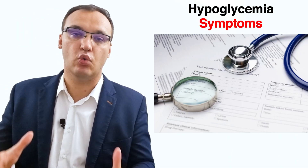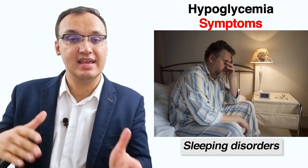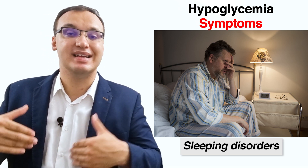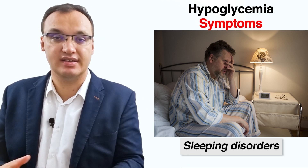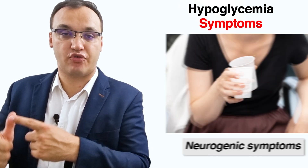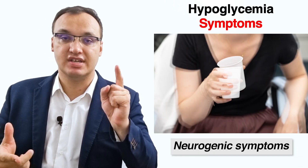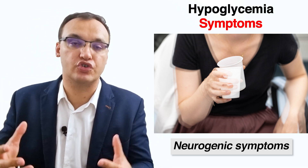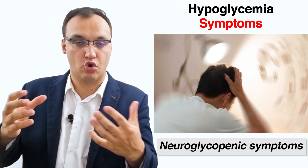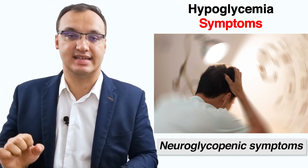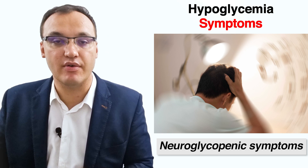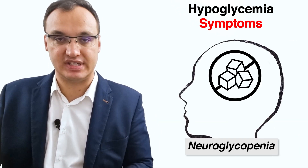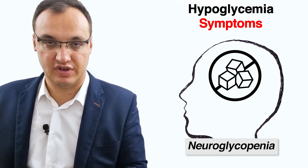A low blood sugar level can also happen while you are sleeping and may cause you to wake up during the night, cause headaches, tiredness, or damp sheets from sweat in the morning. Symptoms such as tremors, palpitations, and sweating are all neurogenic — meaning originating or controlled by the nervous system. In contrast, neuroglucopenic symptoms include dizziness, weakness, delirium, and confusion. Neuroglucopenia is a shortage of glucose in the brain, usually due to hypoglycemia.